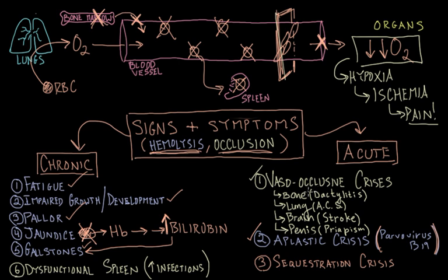If you occlude the blood vessels to the bones of the hands and feet, you get dactylitis. If you occlude the circulation in the lung, you get what's called acute chest syndrome, or ACS. If you occlude the circulation in the brain, you can get a stroke. If you occlude the circulation in the penis, you can prevent blood from draining out, and patients get sustained painful erections — that's called priapism. You can also occlude the circulation to the spleen and actually infarct or kill the spleen, which is very important in fighting infections, making these patients susceptible to certain types of infections and requiring prophylactic antibiotics and vaccinations.